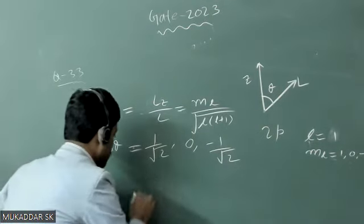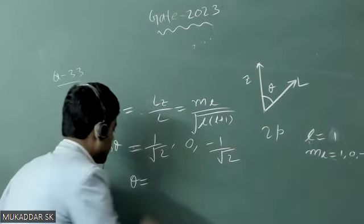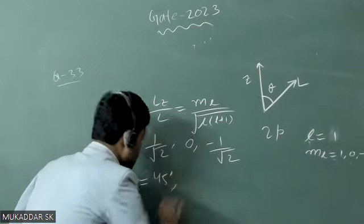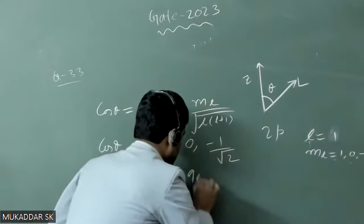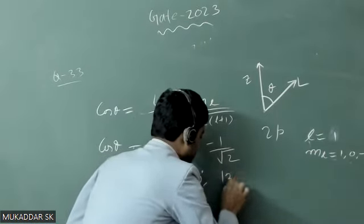1 by root 2 gives a theta value of 45 degrees, 0 gives 90 degrees, and minus 1 by root 2 gives 135 degrees.